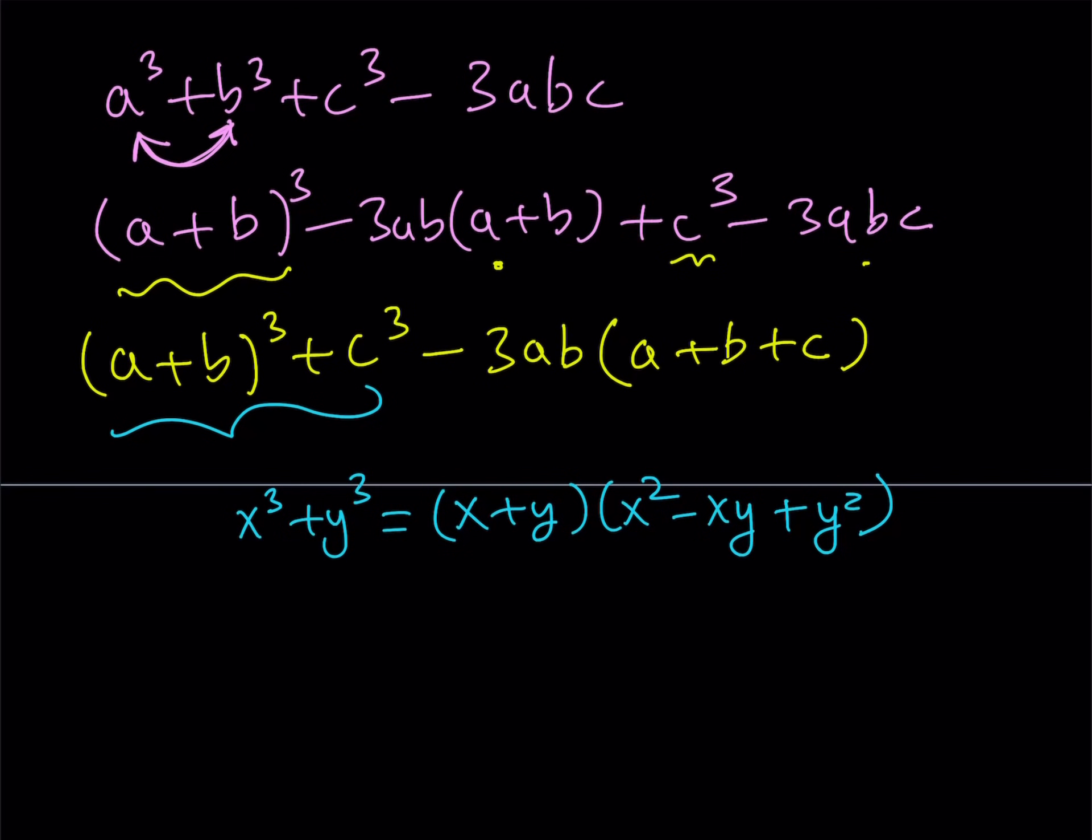So if you just consider this an x, you have something like x cubed plus c cubed, and we can factor it as follows. We're going to write the first term plus the second term, which is c. And then the second factor is going to involve x squared. Remember, x is a plus b in this case, so we're going to write it as a plus b quantity squared minus, we're supposed to multiply a plus b times c, so I can write the c first, c times the quantity a plus b. And finally, we end up with y squared, which in this case is c squared.